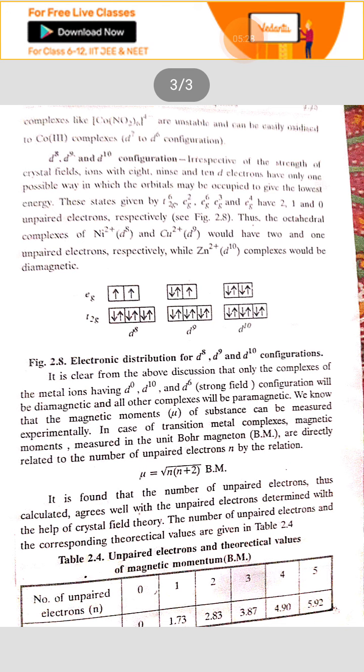Nickel forms very few octahedral complexes because in the formation of octahedral complexes, it has to use the outermost orbitals, outermost d orbitals.